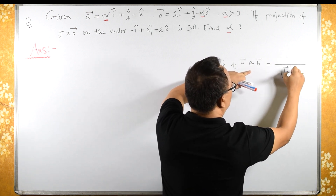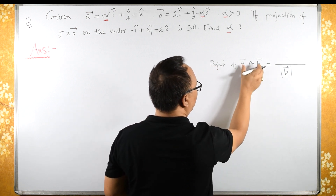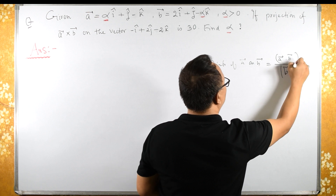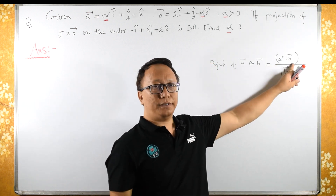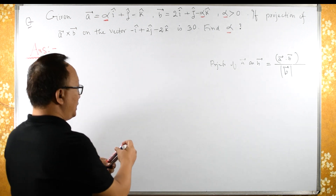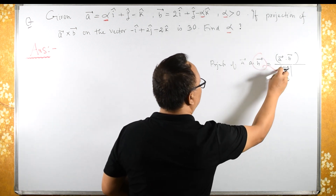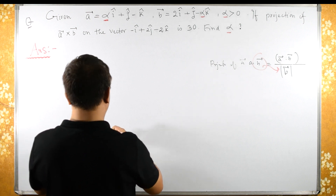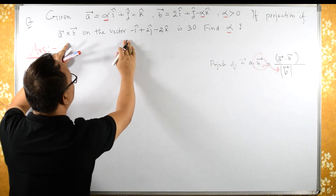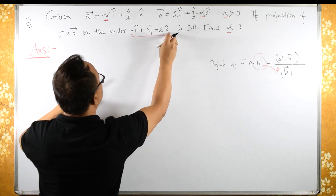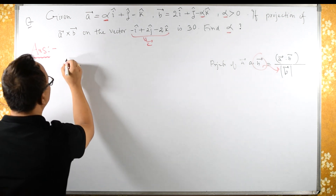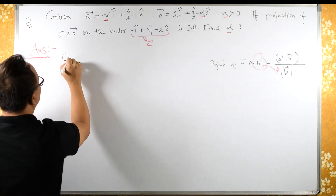Remember: the projection of vector a on vector b is given by the dot product of a and b, divided by the magnitude of b. So a dot b upon magnitude of b. Now in this question, the projection of a cross b on some vector — let us call it vector c — is given.